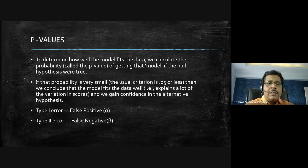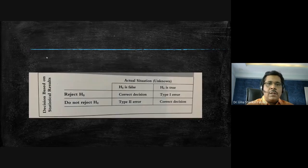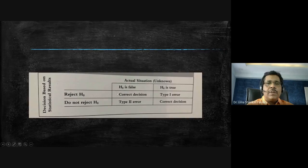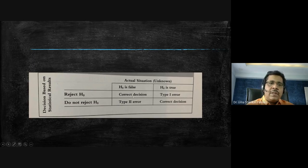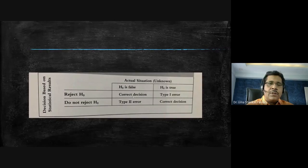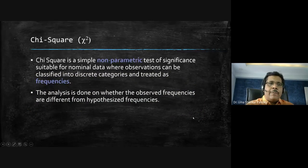There are two kinds of errors: a Type 1 error, also known as a false positive, occurs when we reject the null hypothesis when it is actually true. A Type 2 error, the false negative, is the opposite. This background on errors is relevant since we deal with probability values in chi-square statistics.